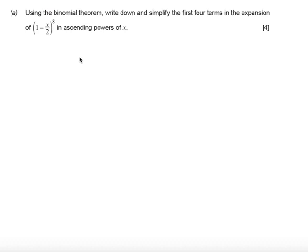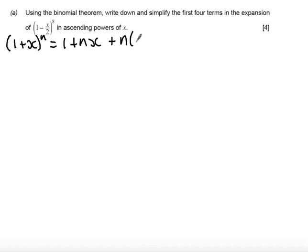In this question we're told to use the binomial theorem to write down and simplify the first four terms in the expansion of (1 - x/2) to the power of 8 in ascending powers of x. In order to answer this we're going to use the form of the binomial expansion: (1 + x) to the n equals 1 plus nx plus n(n-1) over 2 factorial x squared, and so on.